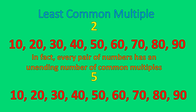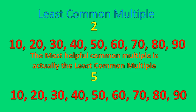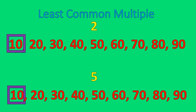We will never be able to list every common multiple of any number. But the most important one we actually work with — the most helpful common multiple — is the least common multiple. You can never find the greatest common multiple because they go on infinitely, but you can find the least common multiple. In this case, it's 10 — the lowest number that is a multiple of both of them.